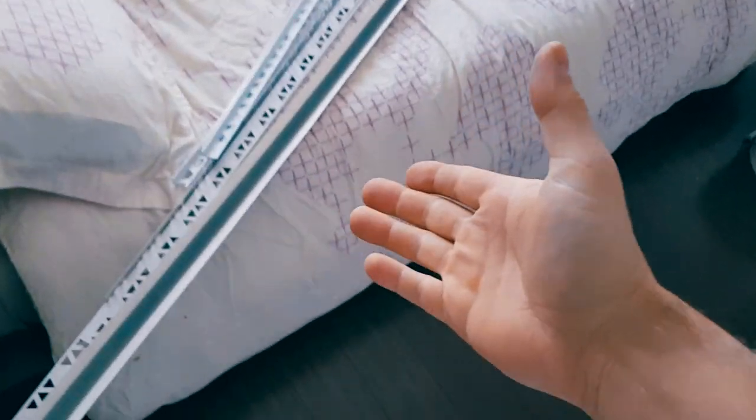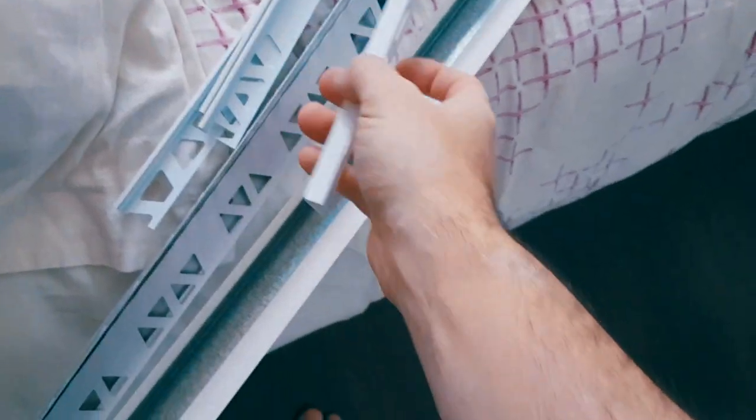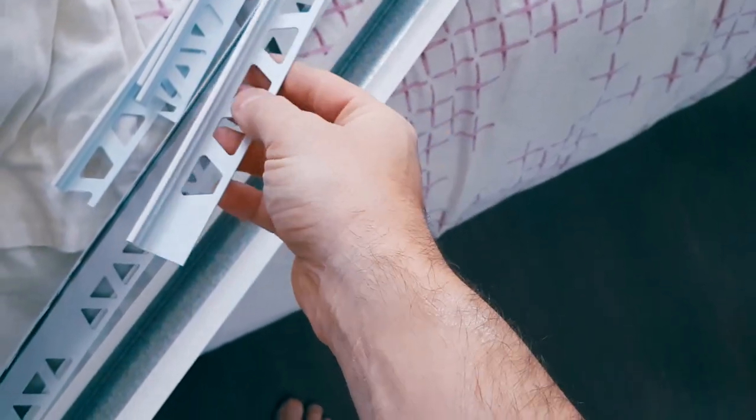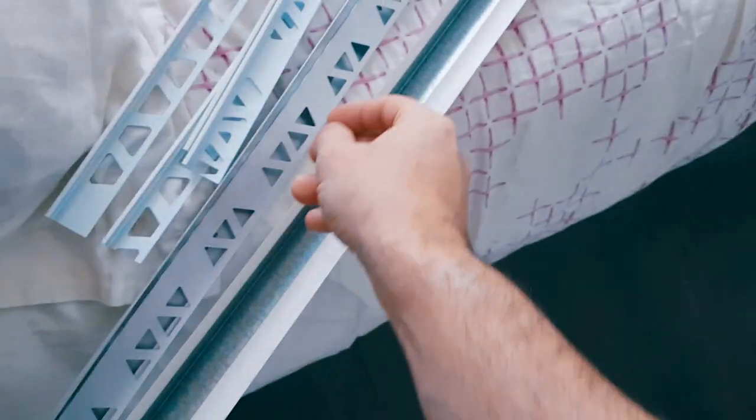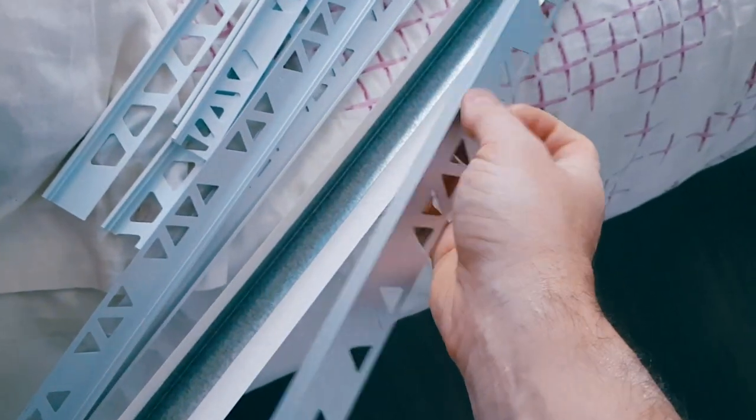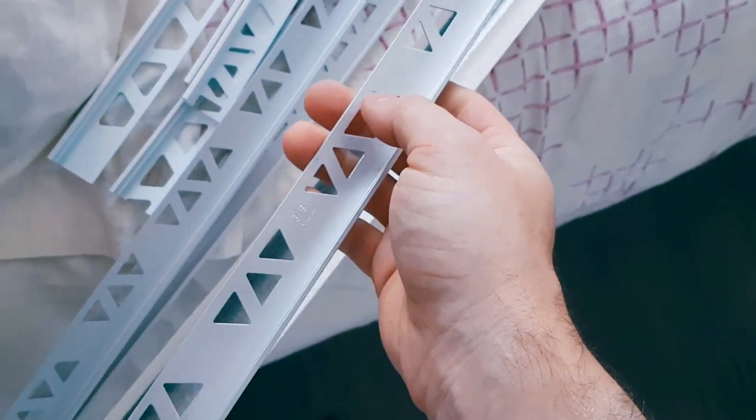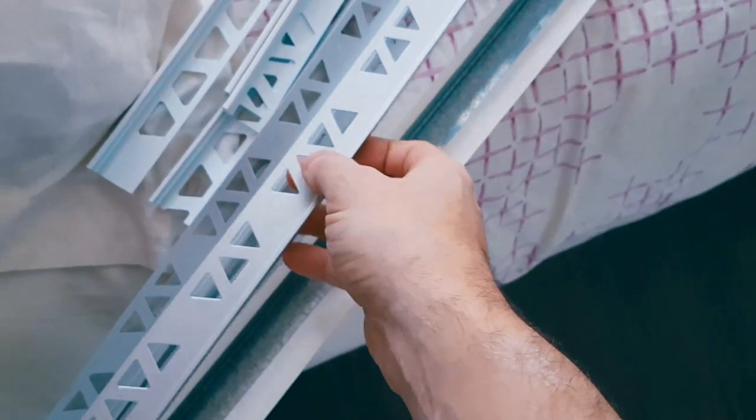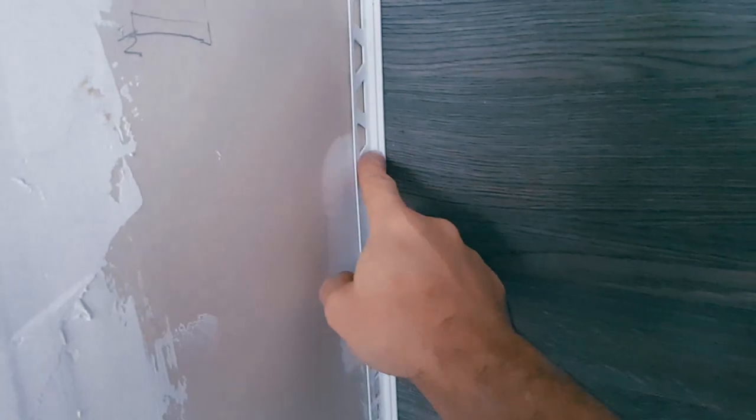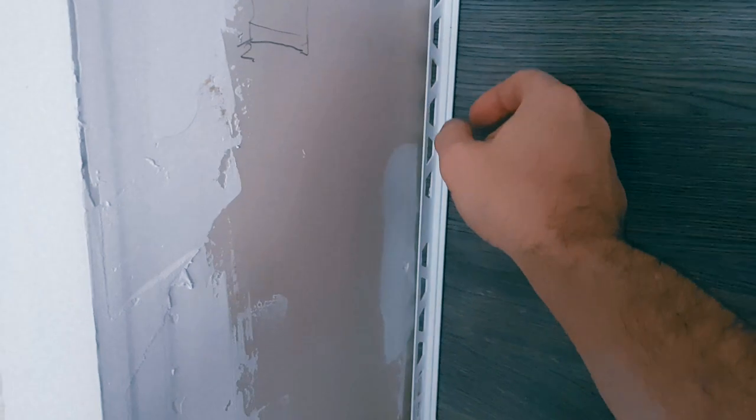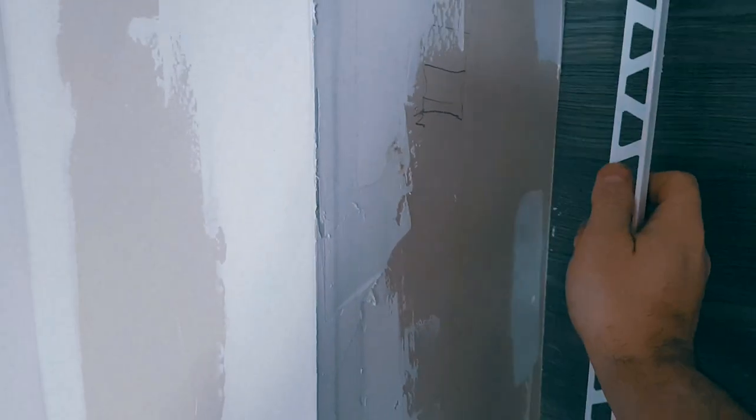We also got some edging for our tiles because we're going with white. We're either going to go with this white 3/8 edging or we also picked up this sort of matte, I think this is nickel option as well. So we'll see which one goes better. It's going to give you a nice, easier, straighter line.